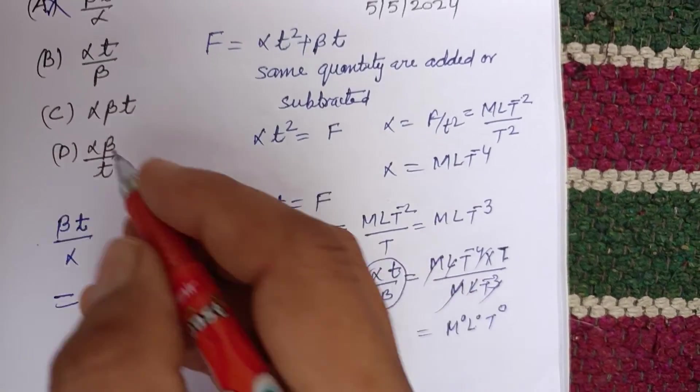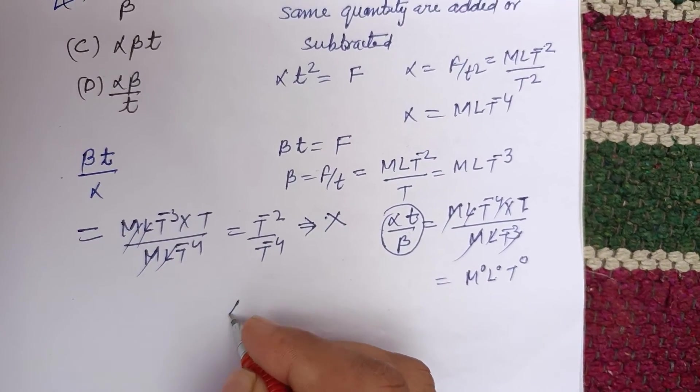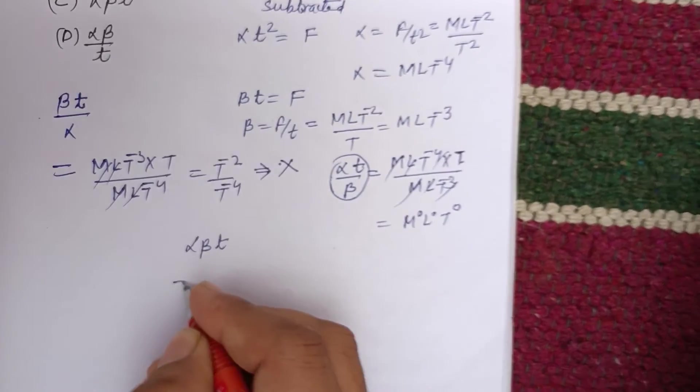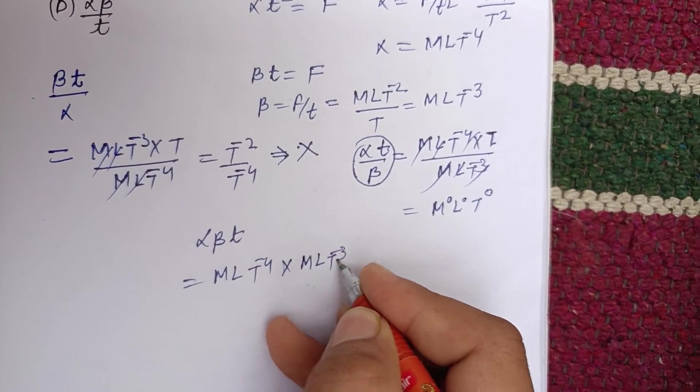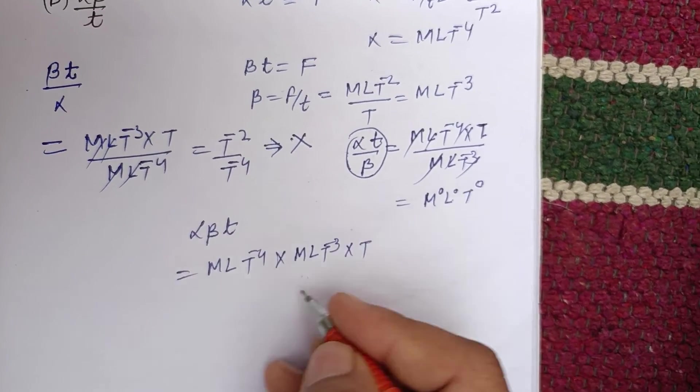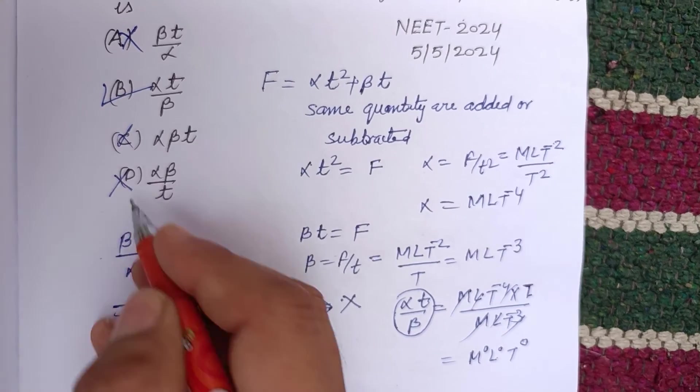We will check alpha beta into t. Then this is MLT minus 4 into MLT minus 3 into t. So this is not dimensionless. Okay, this is also not dimensionless.